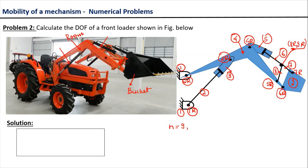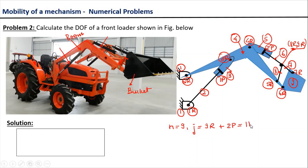In addition, there are two prismatic pairs in this kinematic mechanism. The first prismatic pair is named 1p and the second prismatic pair is named 2p. So the total number of lower pairs in the mechanism equals nine revolute pairs plus two prismatic pairs, which equals 11.